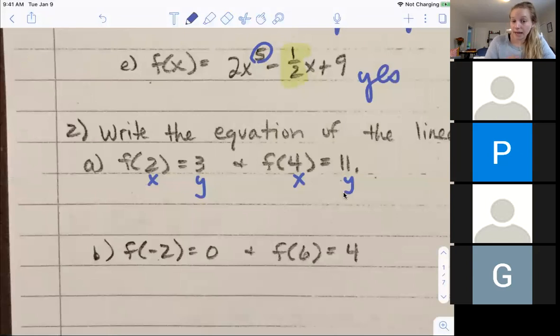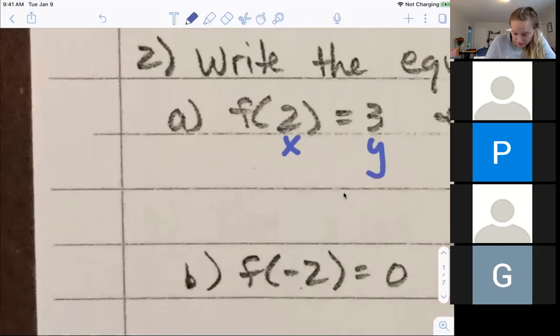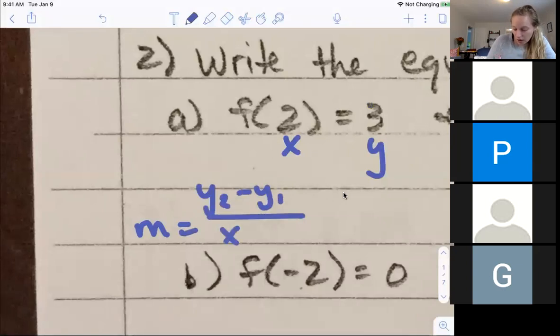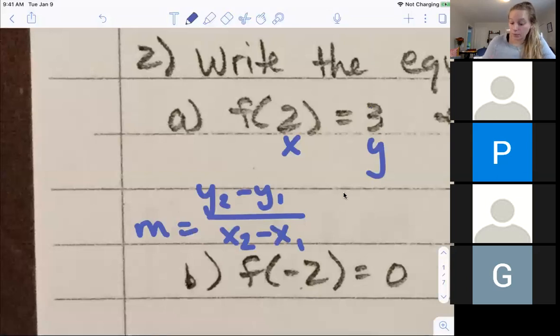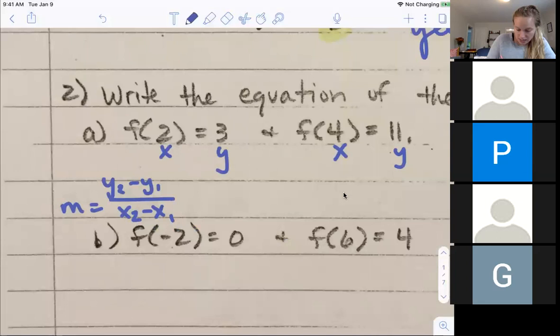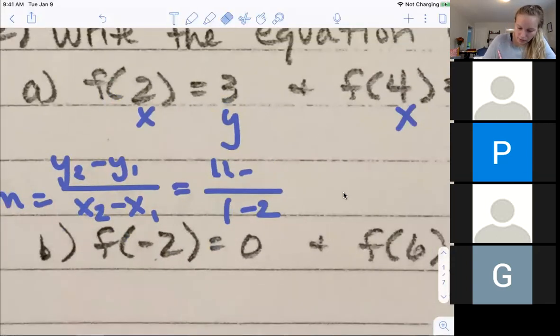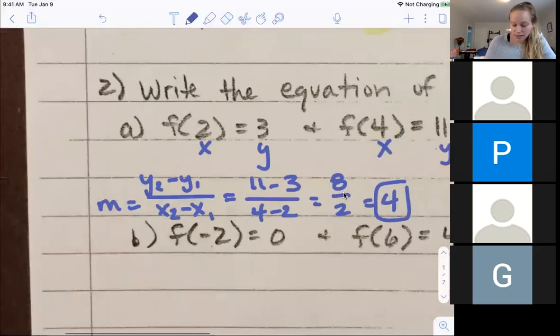Now that we have those two points, I can find slope. Remember it's y2 minus y1 over x2 minus x1. I'm going to say 11 minus 3 over 4 minus 2. 11 minus 3 is 8, 4 minus 2 is 2, 8 divided by 2 is 4. So that's my slope.